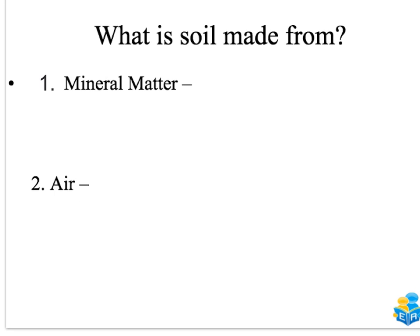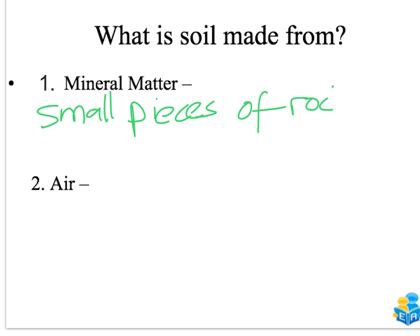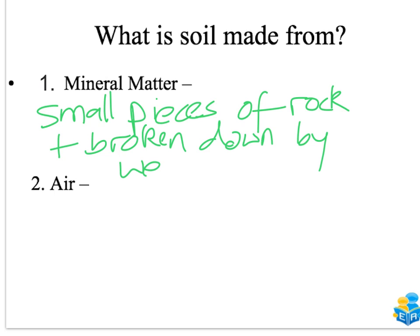Now we know the five ingredients that make up soil — but what are these ingredients? Mineral matter makes up the most of soil, about 43%. It's made up of small pieces of rock and is broken down by weathering and erosion.